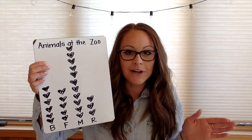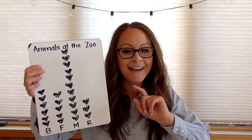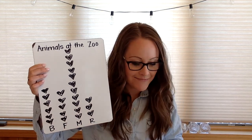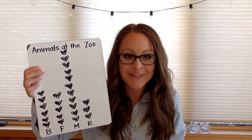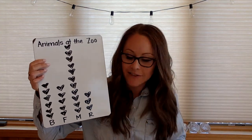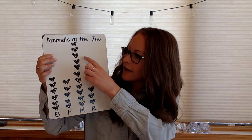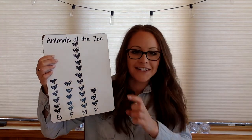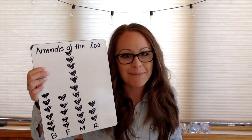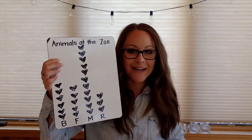The next one is mammals — there were 11, so I made one through eleven hearts. And the last one was reptiles, and that only had three, so I added three.